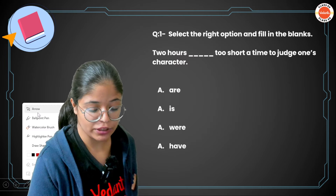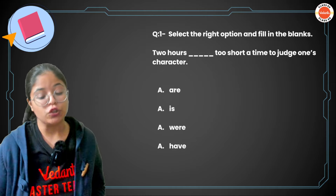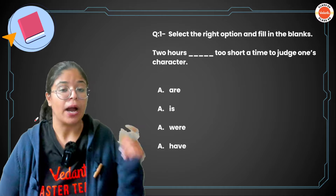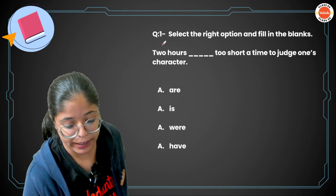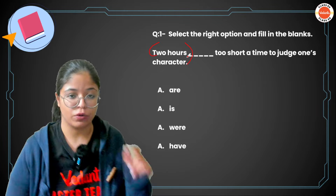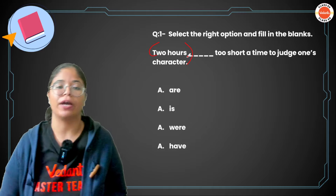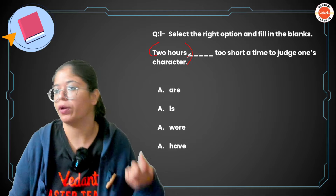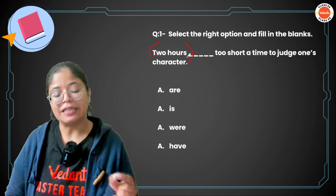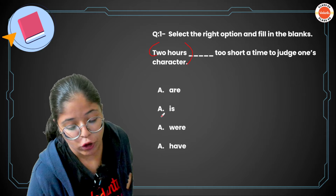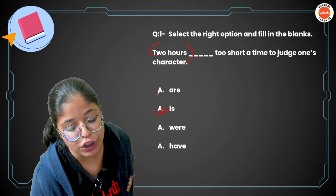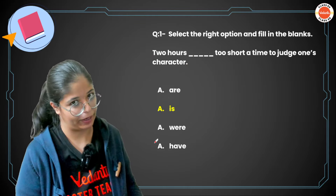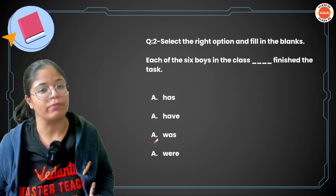All the questions are in MCQ format. Question one: 'Two hours dash, too short a time to judge one's character.' Now, 'two hours' is a specific period of time — a unit of time. Such time periods and units are treated as singular. So in that case, 'is' should come here, because the rest of the options are plural in nature, and we will not consider them.